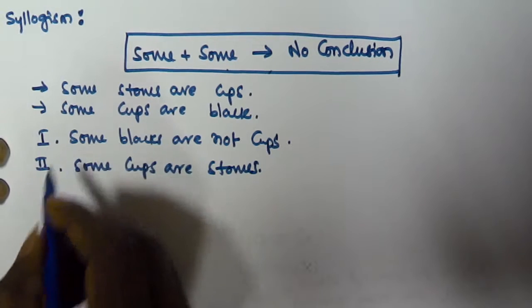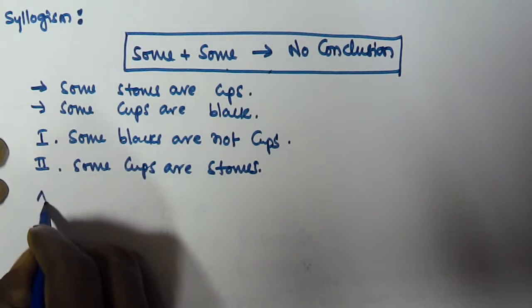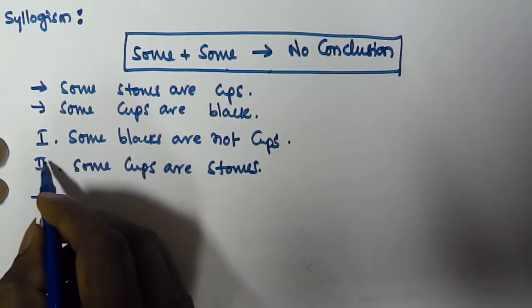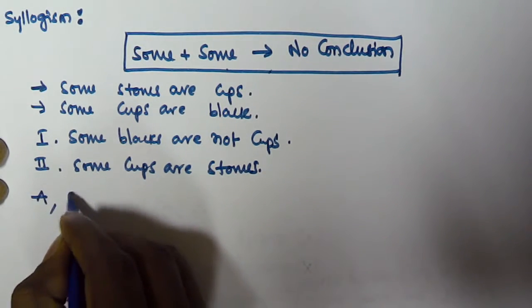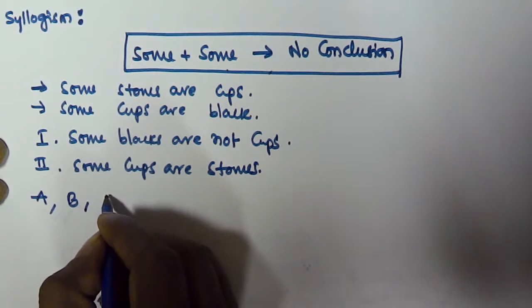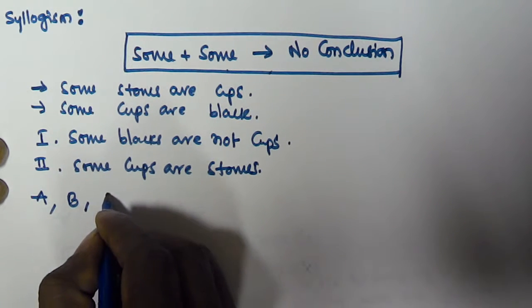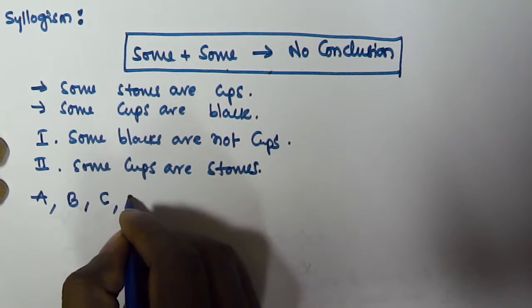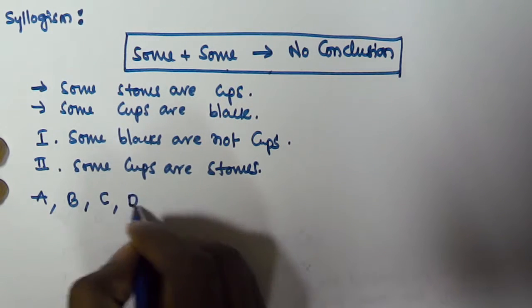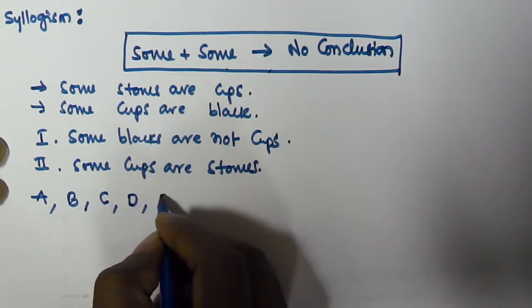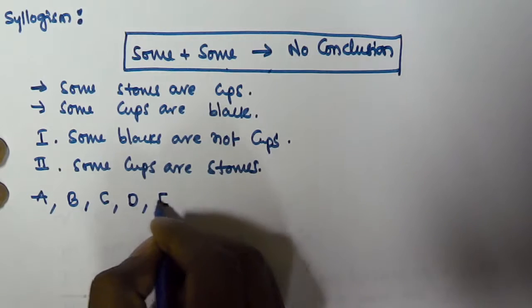Now we have to check which conclusion is true. If the first one alone is true, we select option A. If the second conclusion alone is true, we select option B. If either the first or second is true, we select option C. If both are false, we select option D.